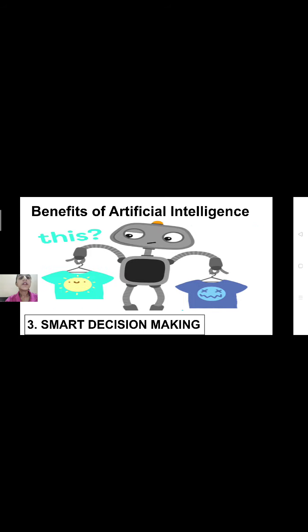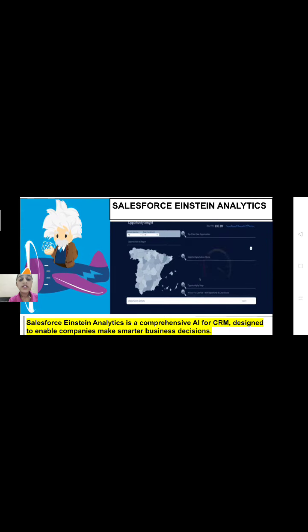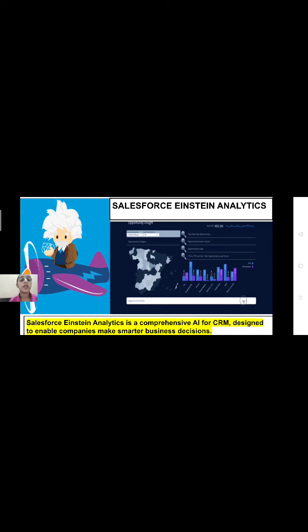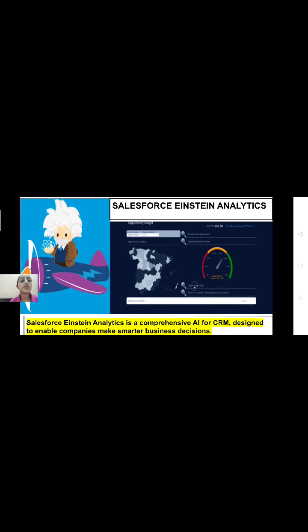Another benefit of artificial intelligence is smart decision making. For instance, a system can detect and decide which item to select. Salesforce Einstein Analytics helps make smart decisions — it is a comprehensive AI for CRM designed to enable companies to make smarter business decisions, automatically applying those decisions within the company.